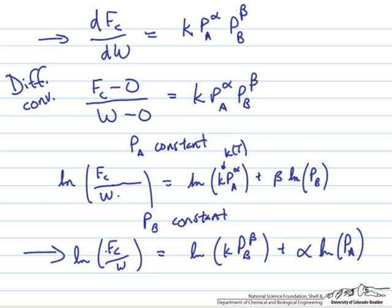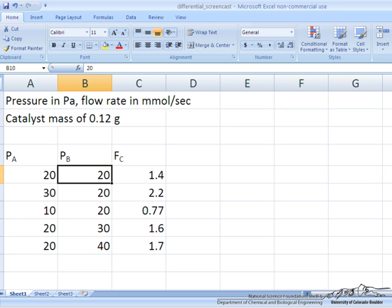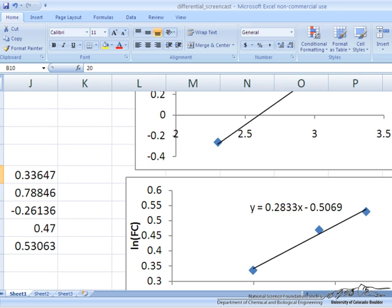And then for the other three data points where A is held constant, we can plot the log of Fc versus the log of Pb, and the slope of that should be beta. And so I've gone ahead and taken the logs and plotted those up.